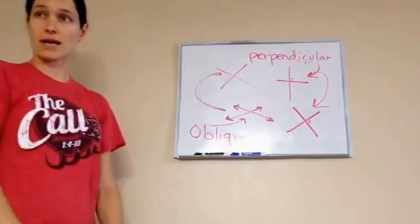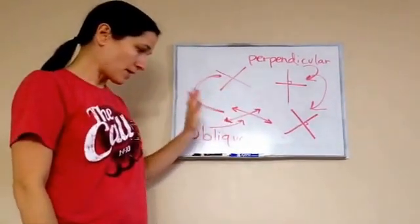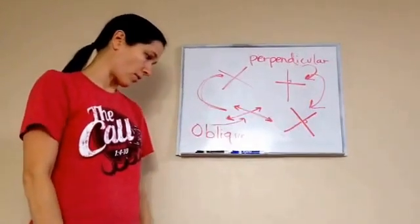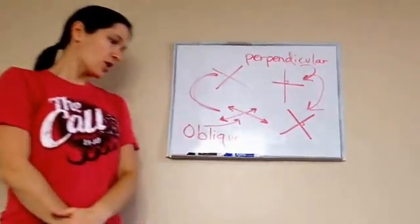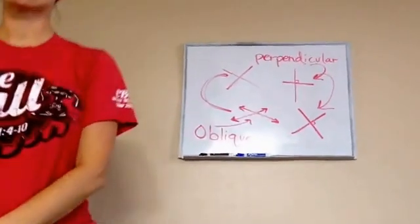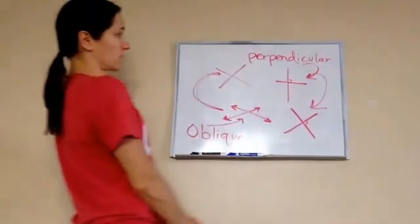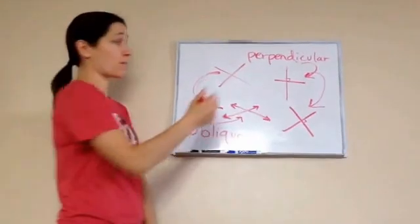Obliques are these ones, perpendicular is that one and that one. So these are intersecting lines. These ones are oblique, and these ones are perpendicular. The way I remember it is perfect square corners, perpendicular.